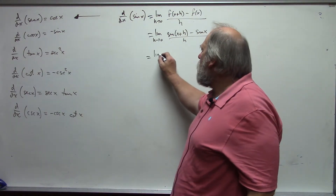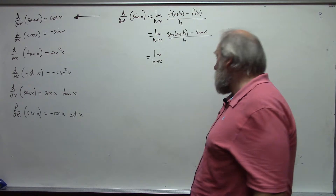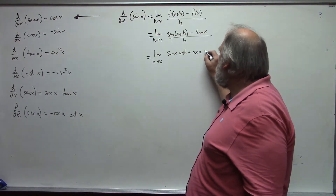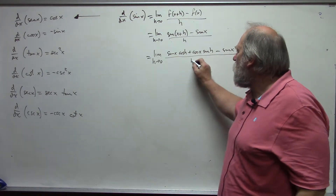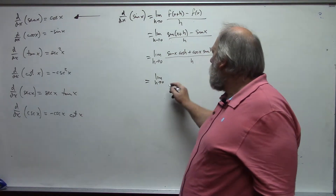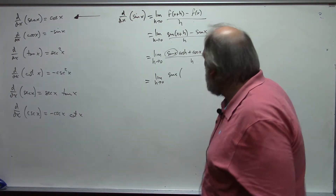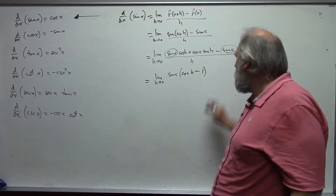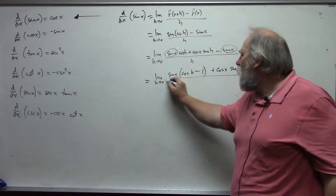Now we use a trig identity, which you should know. Sine of x plus h is not sine of x plus sine of h — do not break it apart that way. The correct expansion gives us sine(x)cosine(h) plus cosine(x)sine(h). Substituting and grouping, we factor out sine(x) and are left with sine(x) times (cosine(h) minus 1) plus cosine(x) times sine(h), all divided by h.